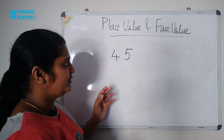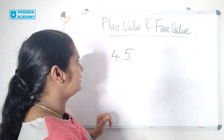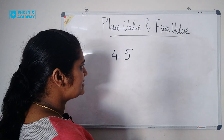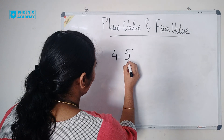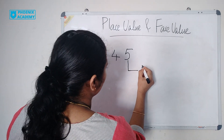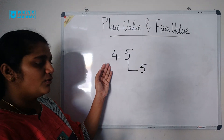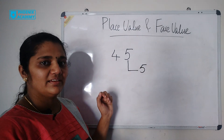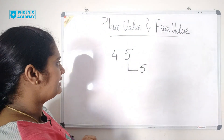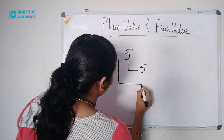45. 45 is 5 ones and 4 tens. 5 is in ones place, so the place value of 5 is 5 ones — that is 5. 4 is in tens place, so the place value of 4 is 4 tens — that is 40.